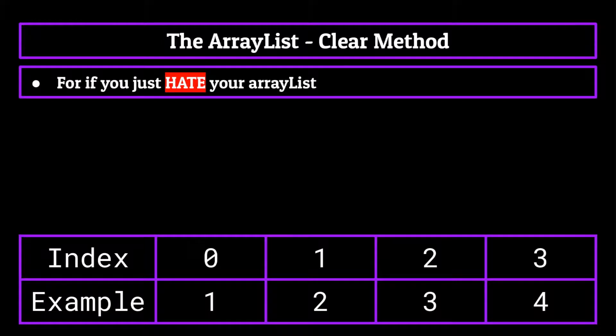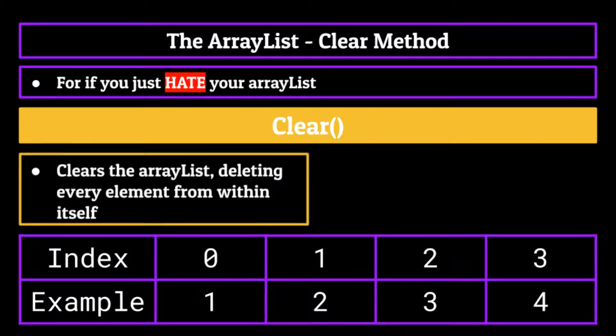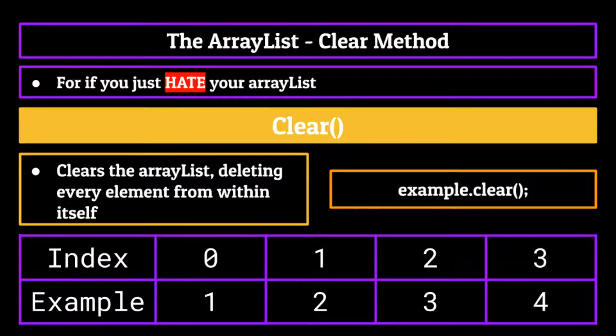Next up is the clear method. And this one is for when you just really dislike the contents of your ArrayList. It's also perhaps the simplest of them all. It does not take in any arguments and simply clears the ArrayList, deleting every element from within itself. Calling example dot clear on our ArrayList would just delete all the elements within it. But I just don't want to do that yet. So for the sake of this series, let's keep the ArrayList filled with the values it currently has.